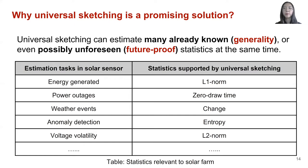The table in this slide shows how the estimation tasks in the solar sensor match the statistics supported by universal sketching. In addition to already known tasks, universal sketching is also able to support unforeseen tasks in the future with the same compact summary from sensors.